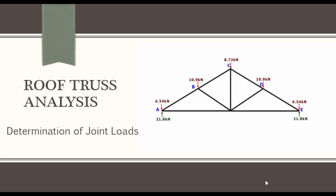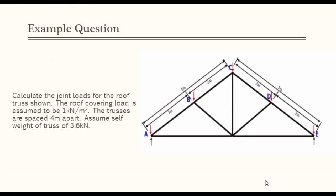Roof Truss Analysis: Determination of Joint Loads. Example Question: Calculate the joint loads for the roof truss shown. The roof covering load is assumed to be 1 kN per m². The trusses are spaced 4 m apart. Assume self-weight of truss of 3.6 kN.